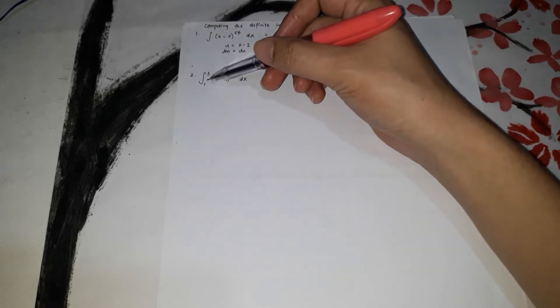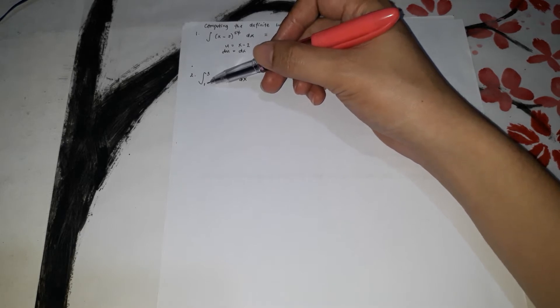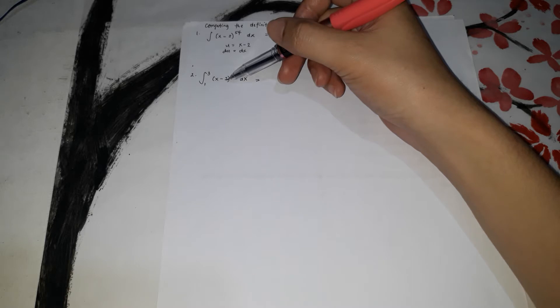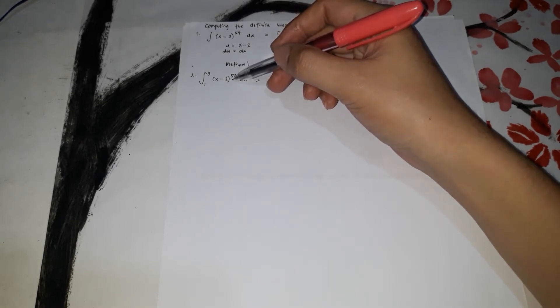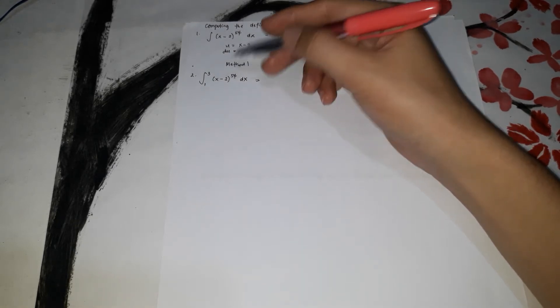For number 2, we're going to get the definite integral — a definite integral because there are upper and lower limits, 1 and 3. To solve this, we'll use two methods, starting with Method 1. In Method 1, we first find the antiderivative of (x minus 2)^54 dx, then substitute the limits.